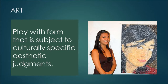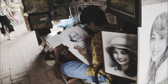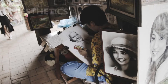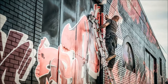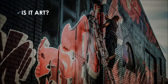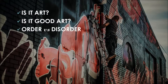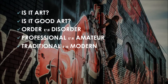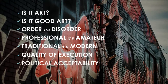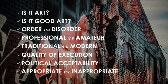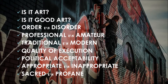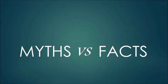Now let's turn to art. Art is a form of expressive culture that plays with form. Whether visual, verbal, or physical — and most art is a combination of these — art involves play with structures according to cultural rules of aesthetics. Art focuses less on the content of expression than on the form the expression takes, the skill with which the form is rendered, and the aesthetic principles that allow members of the community to judge the art as good or bad. The aesthetic principles of a community may include many different kinds of judgments, including whether something counts as art, whether it's good or bad art, orderly or disorderly, professional or amateur, traditional or modern, poorly or well executed, politically acceptable or illegal, appropriate or inappropriate, sacred or profane, and many other distinctions.